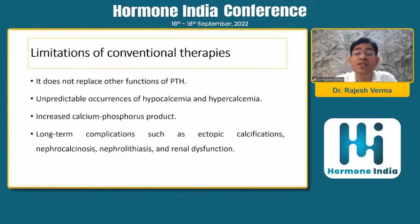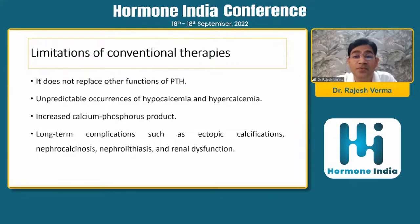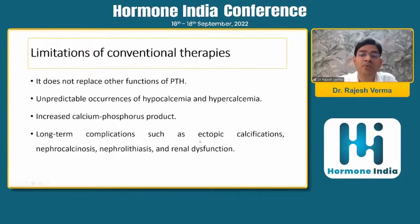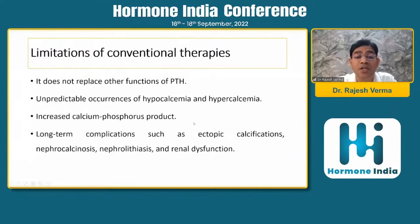There are a few limitations of these conventional therapies. First, they do not replace the other functions of PTH — they can maintain eucalcemia and euphosphatemia, but they do not decrease renal excretion of calcium. There is unpredictable occurrence of hypo- as well as hypercalcemia. There is increased calcium-phosphorus product above 55, thereby increasing ectopic calcifications like nephrocalcinosis, nephrolithiasis, and renal dysfunction.